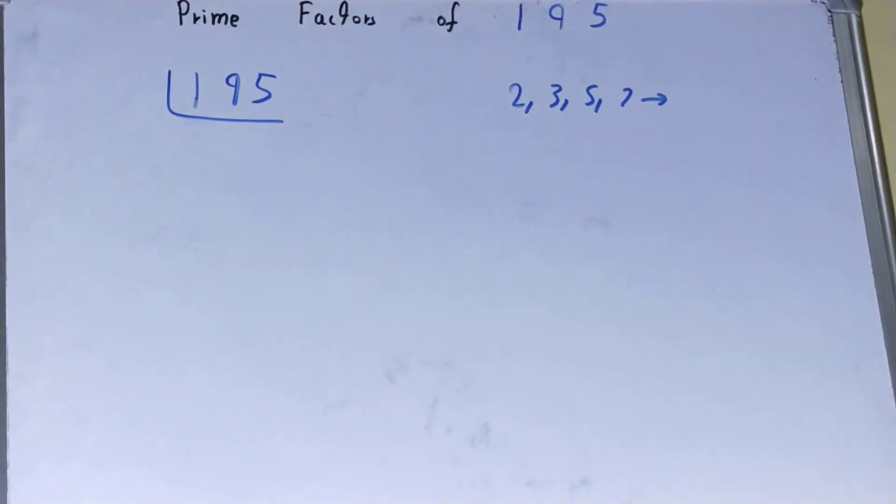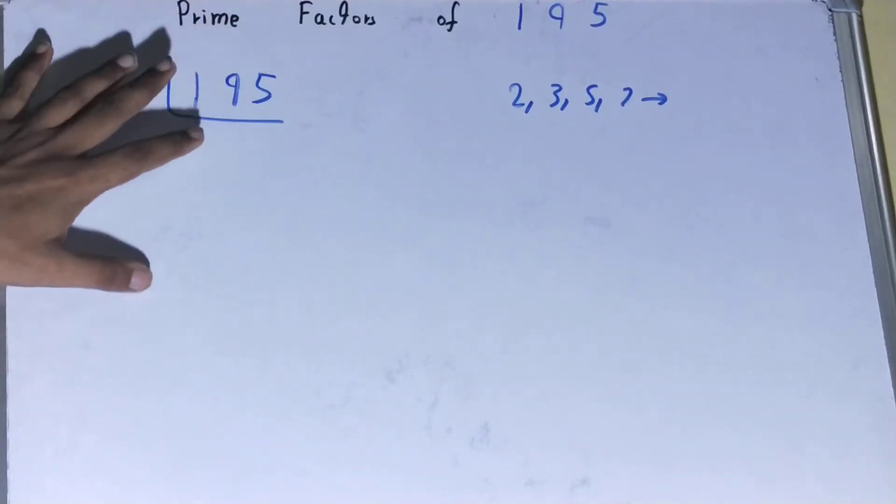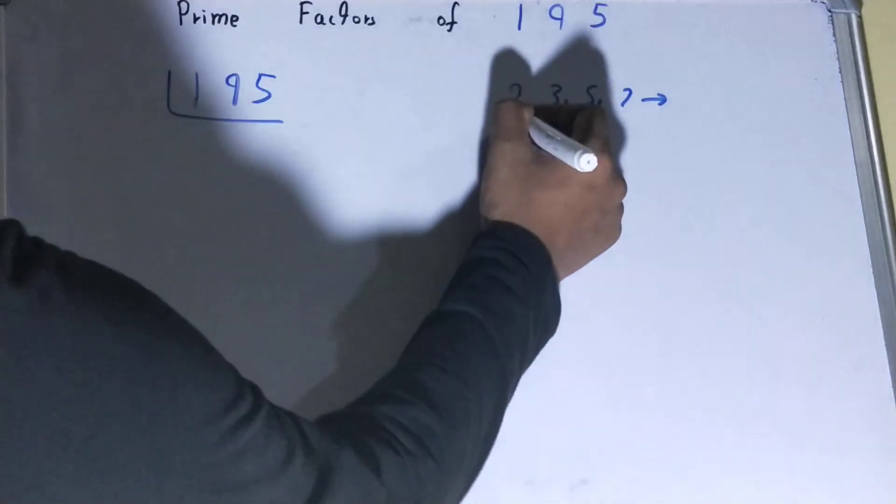Is the number 195 divisible by two? Clearly not, because 195 is an odd number. So we'll go to the next lowest prime number, that is three.